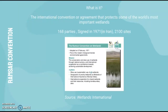The Ramsar Convention is the international convention or agreement that protects some of the world's most important wetlands. It has 168 parties, was signed in 1971 in Iran, and has 2,100 sites. Its mission is the conservation and wise use of wetlands through national actions and international cooperation as a contribution towards achieving sustainable development. Its three pillars are: wise use of all wetlands, designation of priority wetlands as wetlands of international importance for Ramsar sites, and international cooperation for shared wetlands and their resources, including transboundary sites.